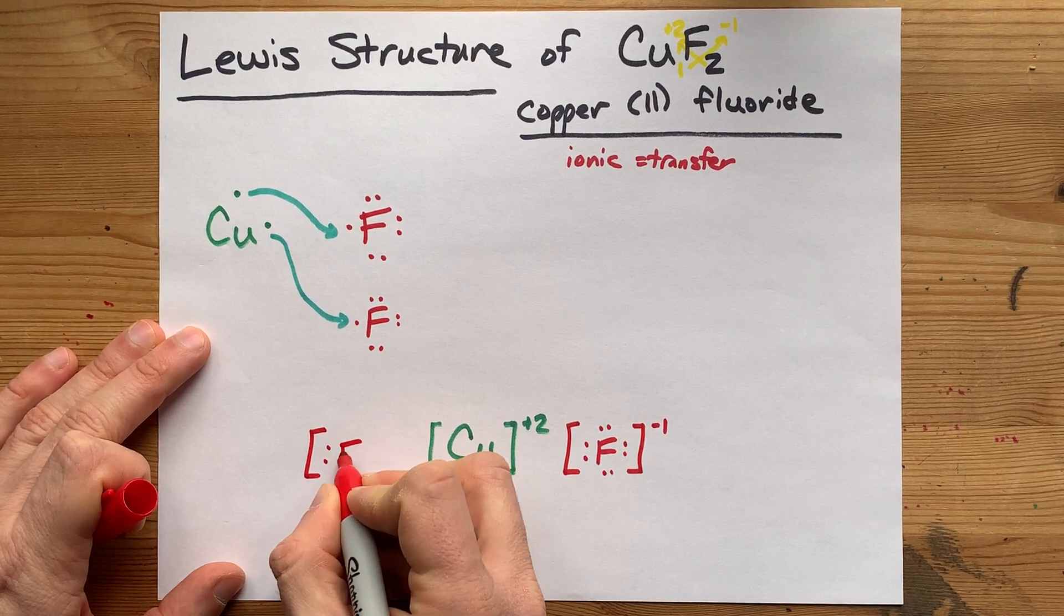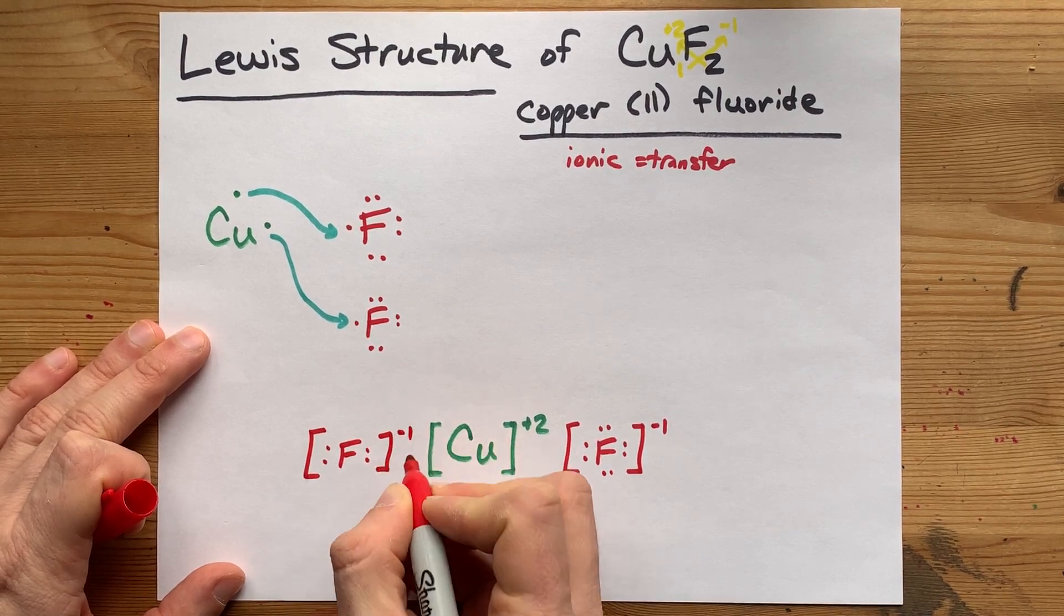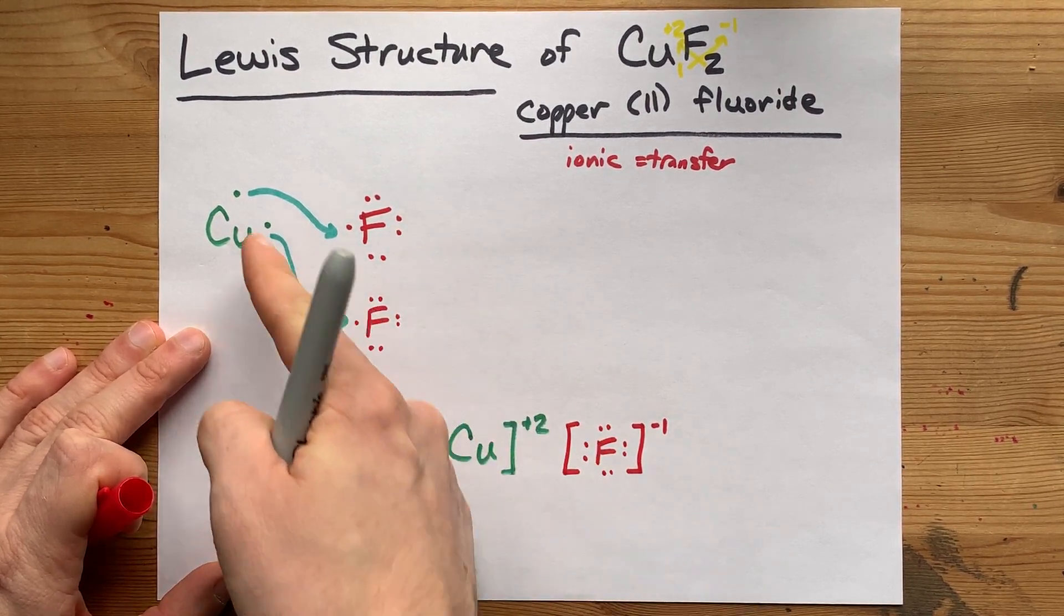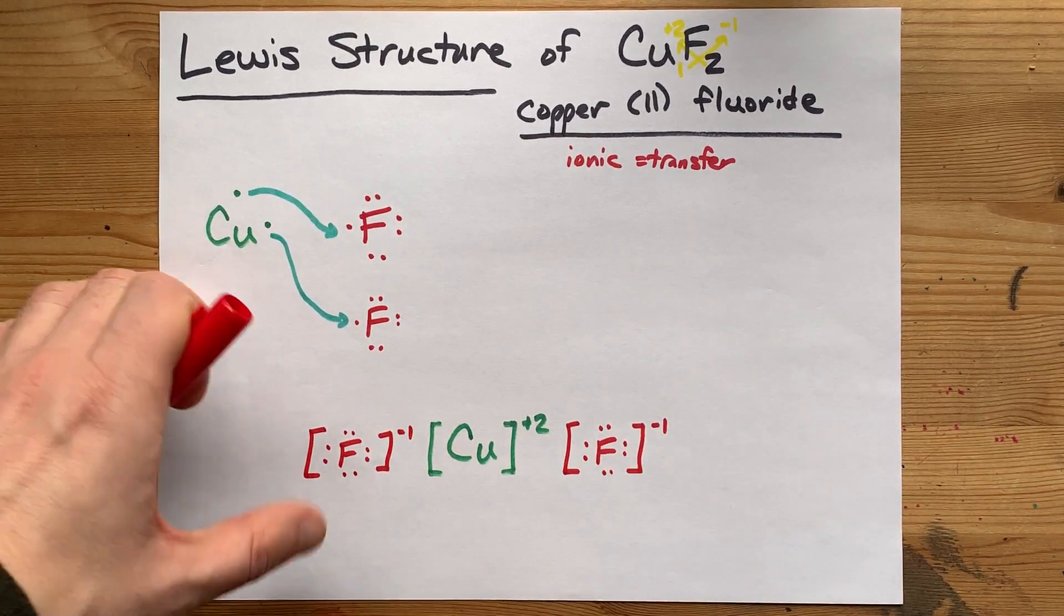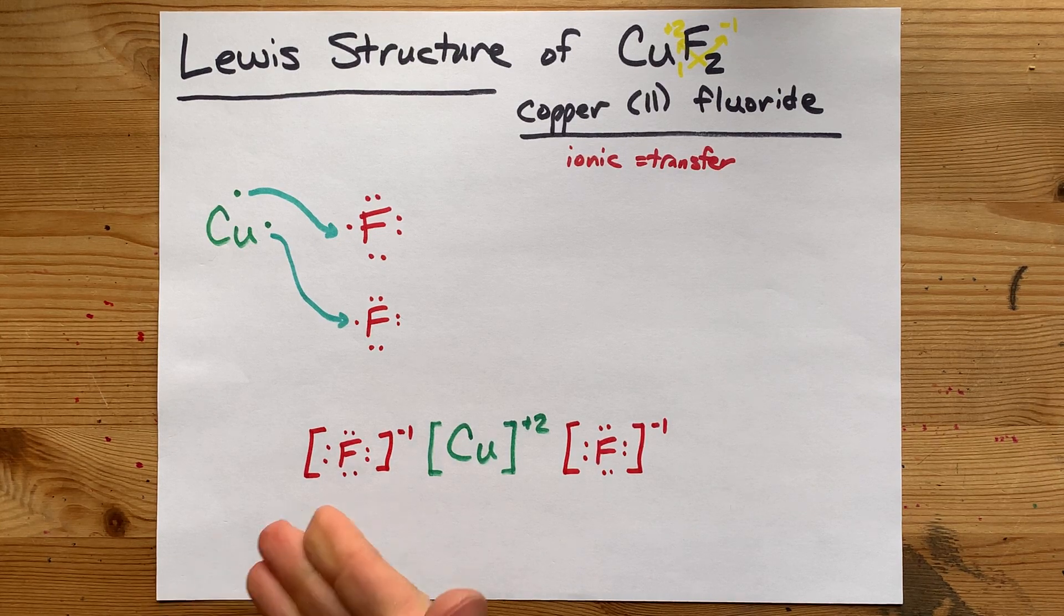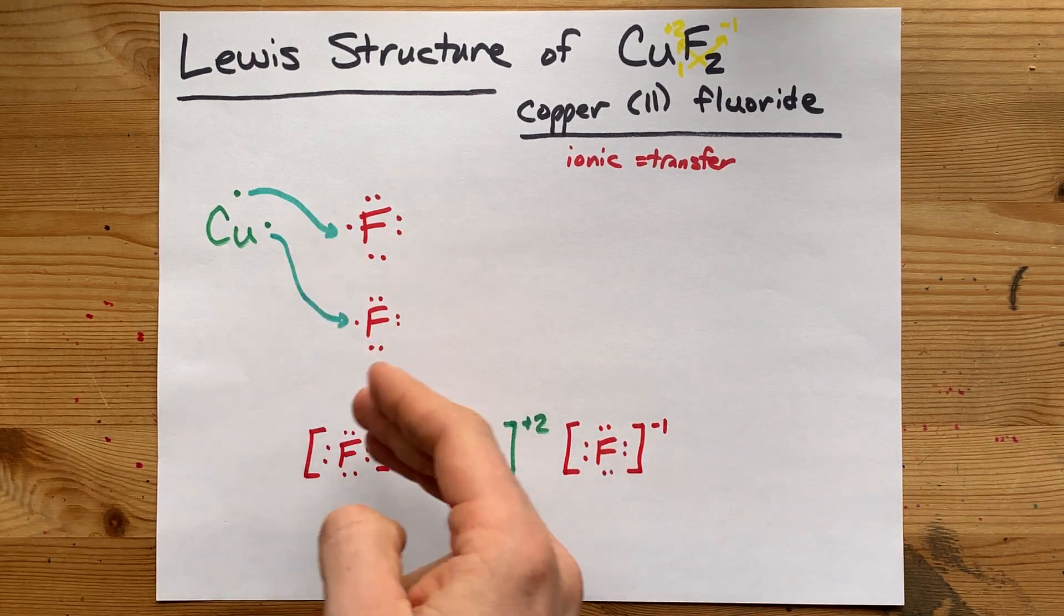You're going to have to draw that fluorine twice, because you needed 2 fluorines to absorb the electrons from the copper. They both need the complete octet. And here's your completed Lewis structure for copper 2 fluoride.